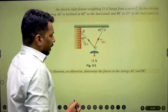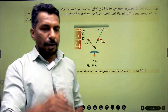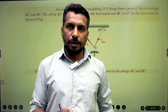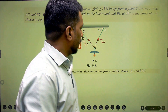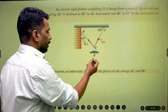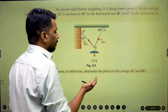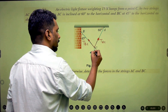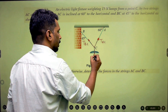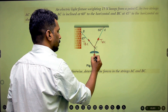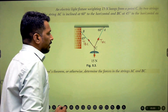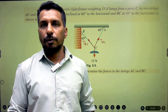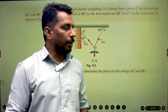Weight always acts vertically downward and is expressed in Newtons. They have directly given 15 Newton, so there is no need to convert the value. Weight acts vertically downward at C. At point C, we are getting three forces and all three are concurrent forces passing through point C.